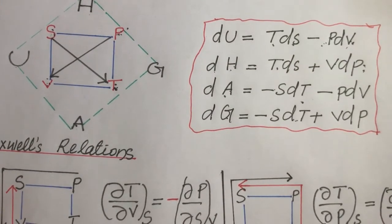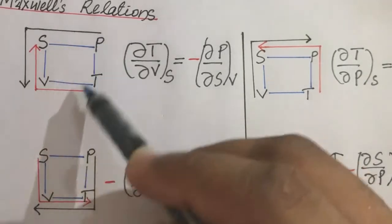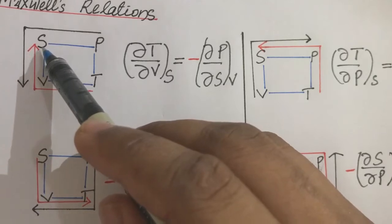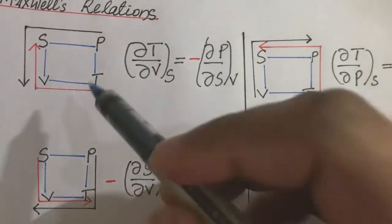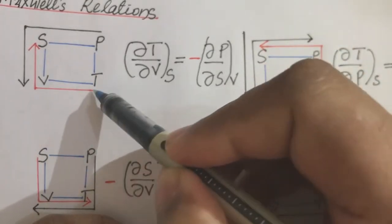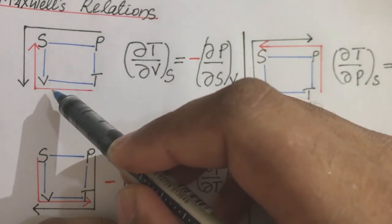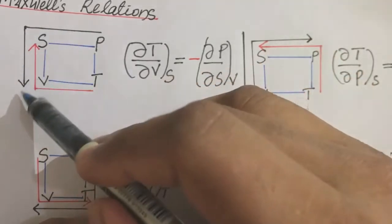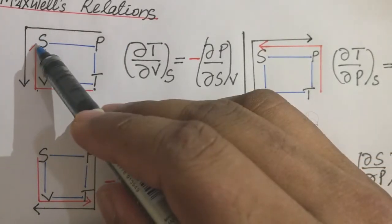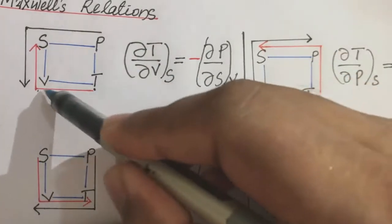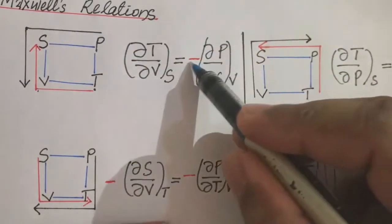Now we move on to Maxwell's relations, which are very important. We write only S, P, V, T — that is 'Satya Prakash, very talented' — and draw a red line starting from T. We draw another line covering the arrow through P, S, V. The first Maxwell relation is: (∂T/∂V) at constant S is positive, equals −(∂P/∂S) at constant V, since the arrow is downward and treated as negative.